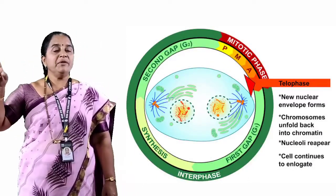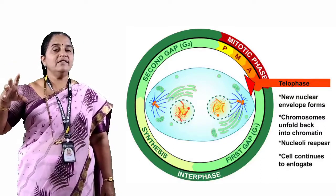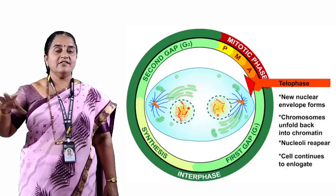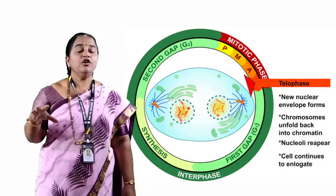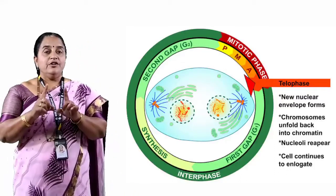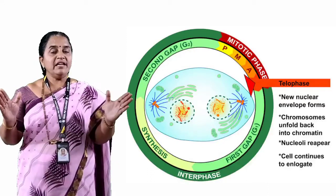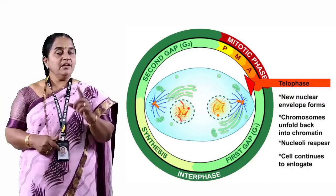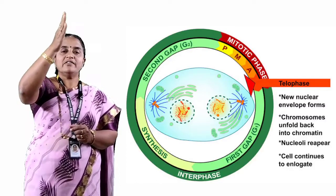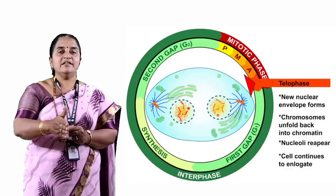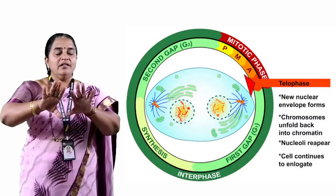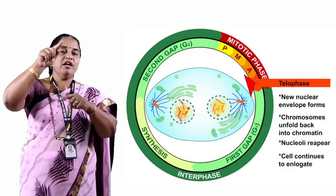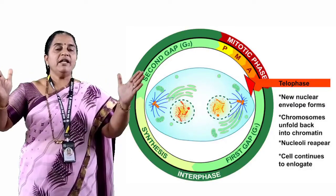In telophase, the nuclear membrane reappears around each set of chromatids, and the chromatids start becoming thread-like, forming a network-like structure in the nucleoplasm. During telophase, not only does the nuclear membrane reappear — even the nucleolus reappears — and division of the cytoplasmic components takes place. In the case of a plant cell, the phragmoplast develops a cell plate in the center and spindle fibers dissolve, resulting in the formation of two daughter cells. In the case of an animal cell, a constriction furrow develops, deepens, and divides the parental cell into two equal daughter cells.